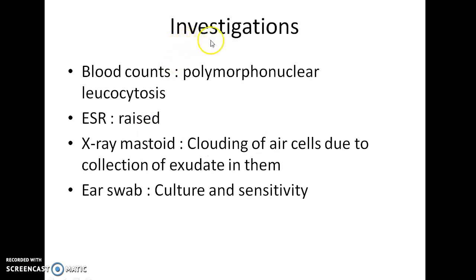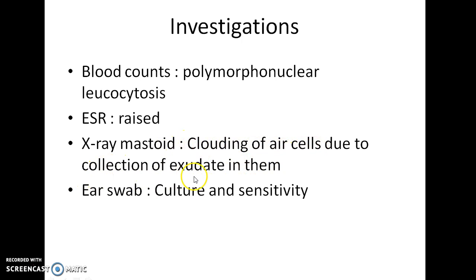Investigations in acute mastoiditis: blood counts reveal polymorphonuclear leukocytosis, and the ESR is raised. X-ray of the mastoid shows clouding of air cells due to collection of exudate in them. An ear swab is done for culture and sensitivity of the organism.